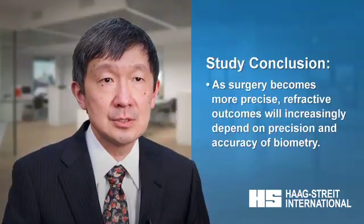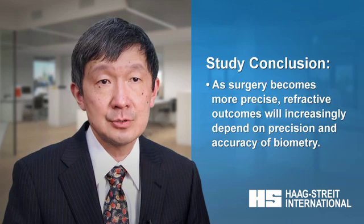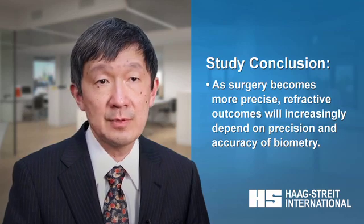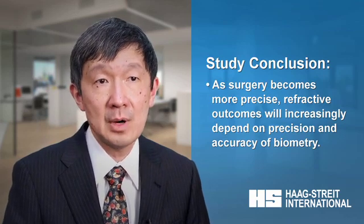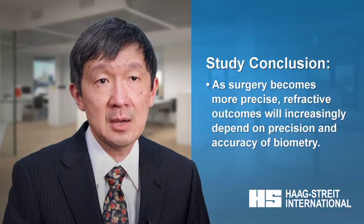The second landmark paper was published in 2011 in Ophthalmology by Hahn, in which the benchmark of refractive outcome after phaco was set at 80% of eyes having a refractive error of less than 0.5 diopters three months after surgery. In this study, optical biometry, micro-incisional phaco, and foldable IOL were employed. These two studies show that as cataract surgery becomes ever more precise, the refractive outcome would depend even more on the precision and accuracy of biometry.